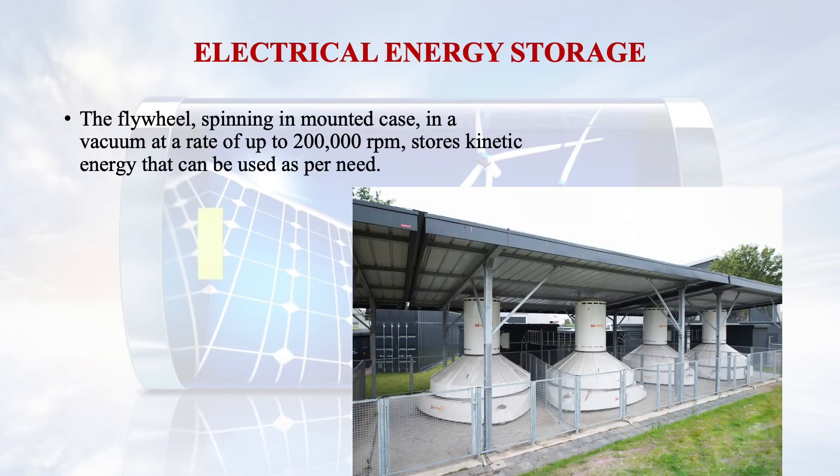Another way of storing electrical energy is using a flywheel. In this simple flywheel method, a spinning mass is mounted in a case in a vacuum at a rate of up to 200,000 RPM. This stores kinetic energy that can be used whenever it is needed.